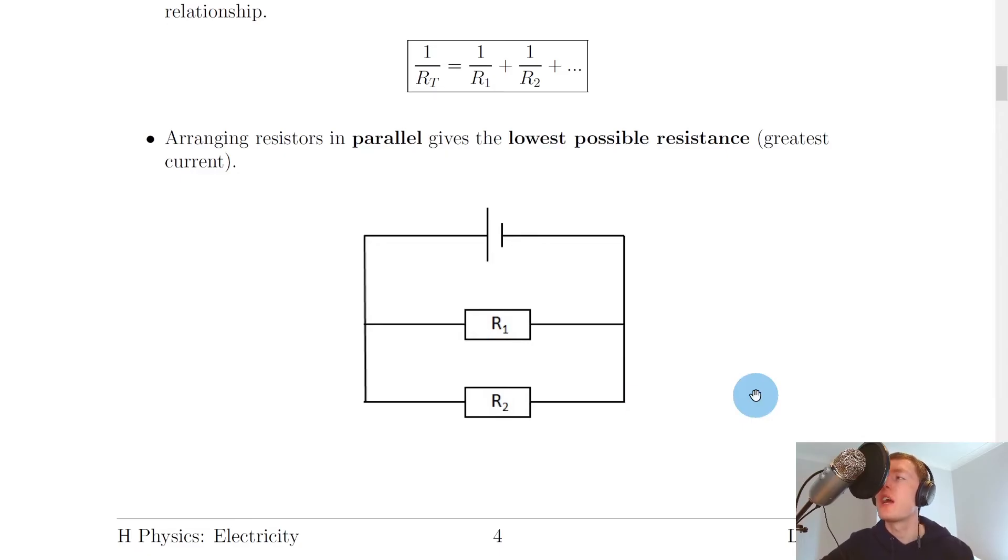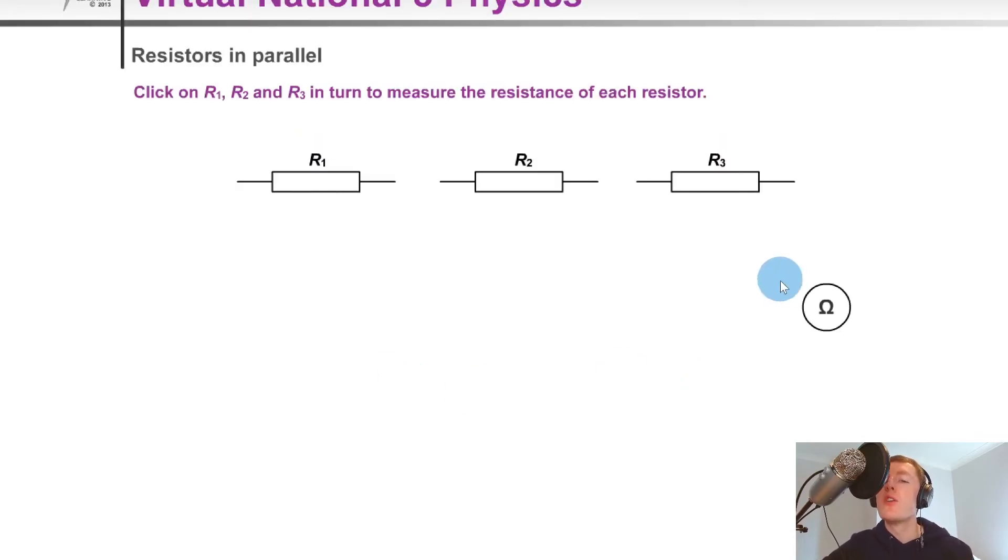Just to show you a quick simulation to help you visualize this, let's say I've got an ohmmeter here, and I want to measure the resistance values of each of these three resistors, R1, R2, and R3 separately. So if I use my ohmmeter here, I can measure R1, and let's say that's measured to be 10 ohms.